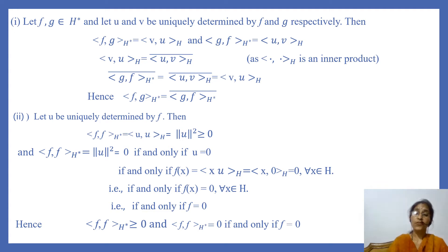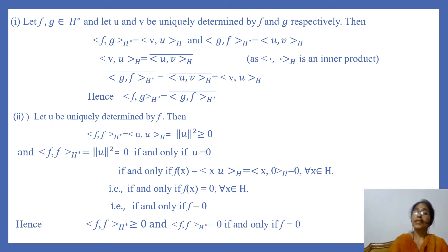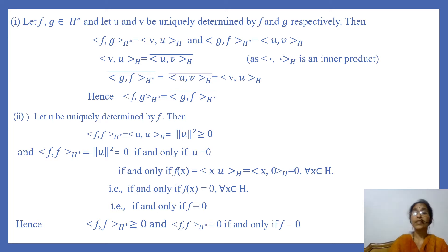So we have shown that ⟨F, F⟩ ≥ 0 and ⟨F, F⟩ = 0 if and only if F = 0. Thus the second condition is also satisfied.